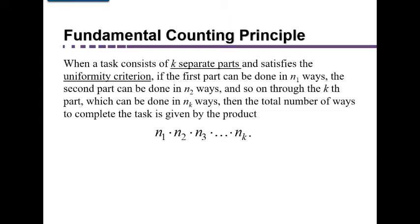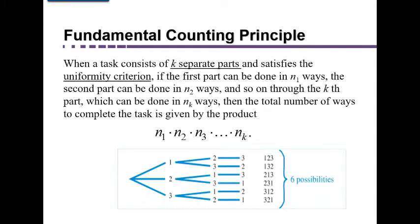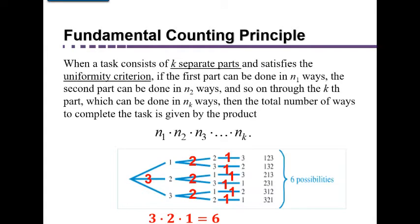Let's look at a numerical example before reading the formal definition of the fundamental counting principle. Here's the tree diagram for constructing three-digit numbers using digits 1, 2, and 3 — we came up with six possibilities. There were three ways to pick the first digit, two ways to pick the second, and only one remaining possibility for the third. Notice that 3 × 2 × 1 = 6, matching our six possibilities — that's not a coincidence.